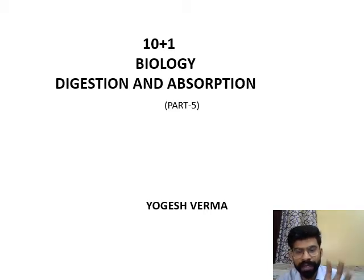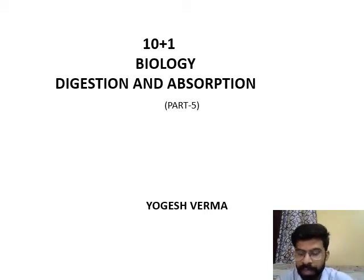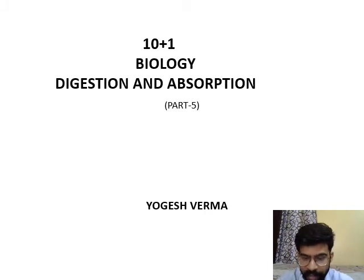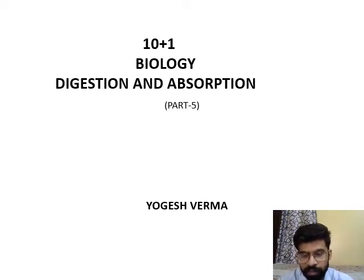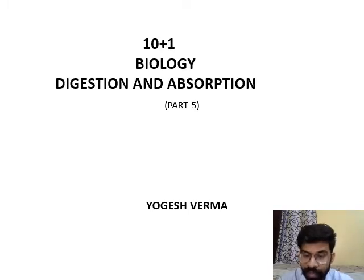Before starting, let's recall Parts 1 through 4. In Part 1, we covered the alimentary canal — the parts of the alimentary canal, associated glands, saliva, and salivary glands. In Part 2, we covered digestion of carbohydrates, proteins, fats, and nucleic acids.